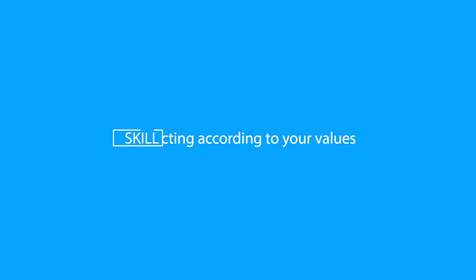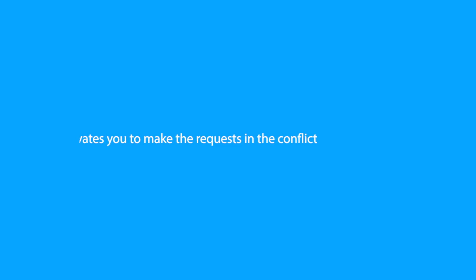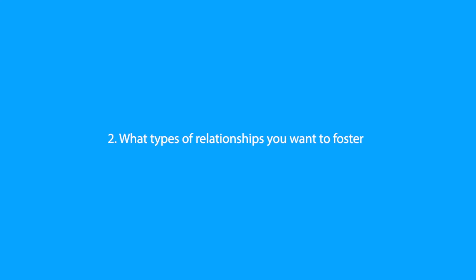Let's move on to the last assertiveness skill. Skill 6: acting according to your values. Acting according to your values can refer to: first, what motivates you to make the requests in the conflict, and second, what types of relationships you want to foster.